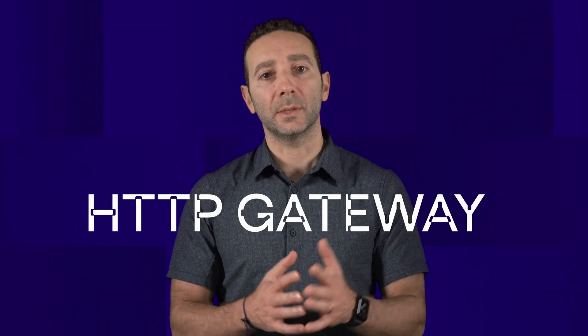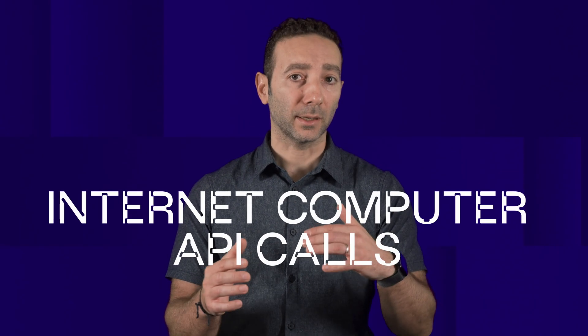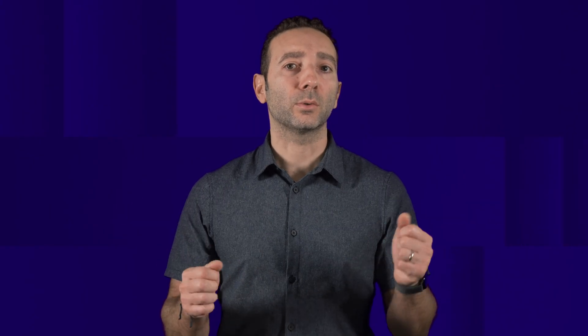But you might wonder, how does my browser talk to a blockchain? Well, that's the role of an HTTP gateway. Its job is to translate standard HTTP requests, the kind that your browser would make, into IC API calls and back. This allows a browser to load assets like HTML, stylesheets, or JavaScript from a canister to serve front ends.